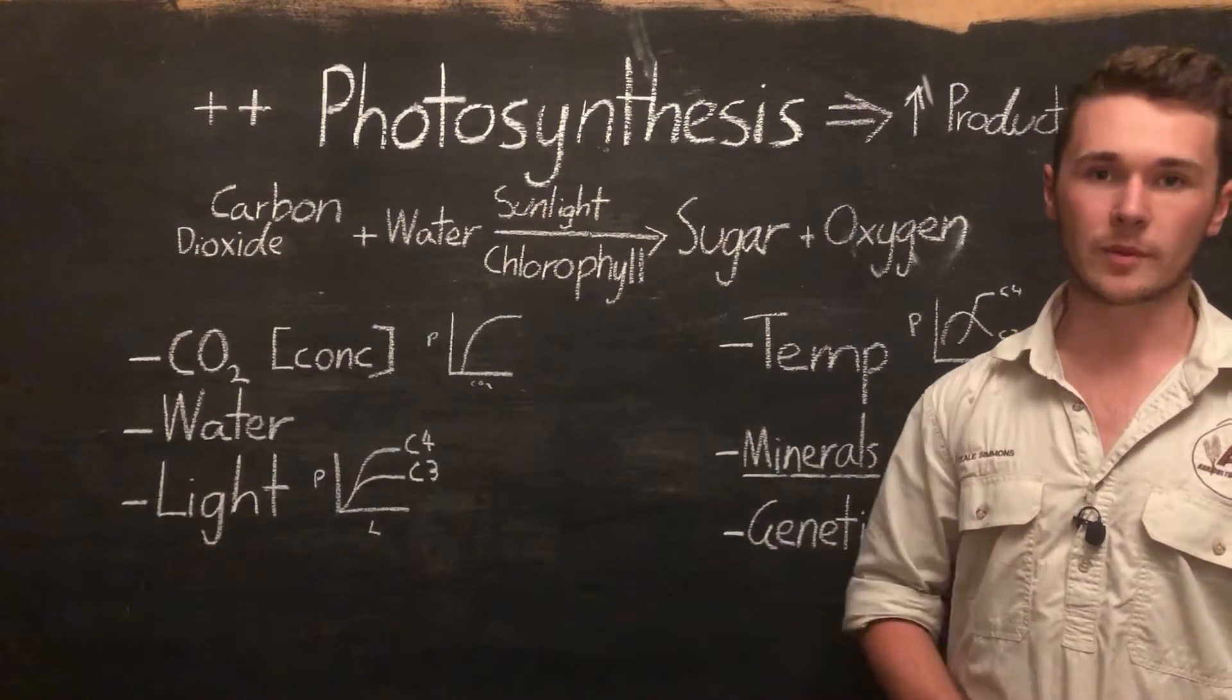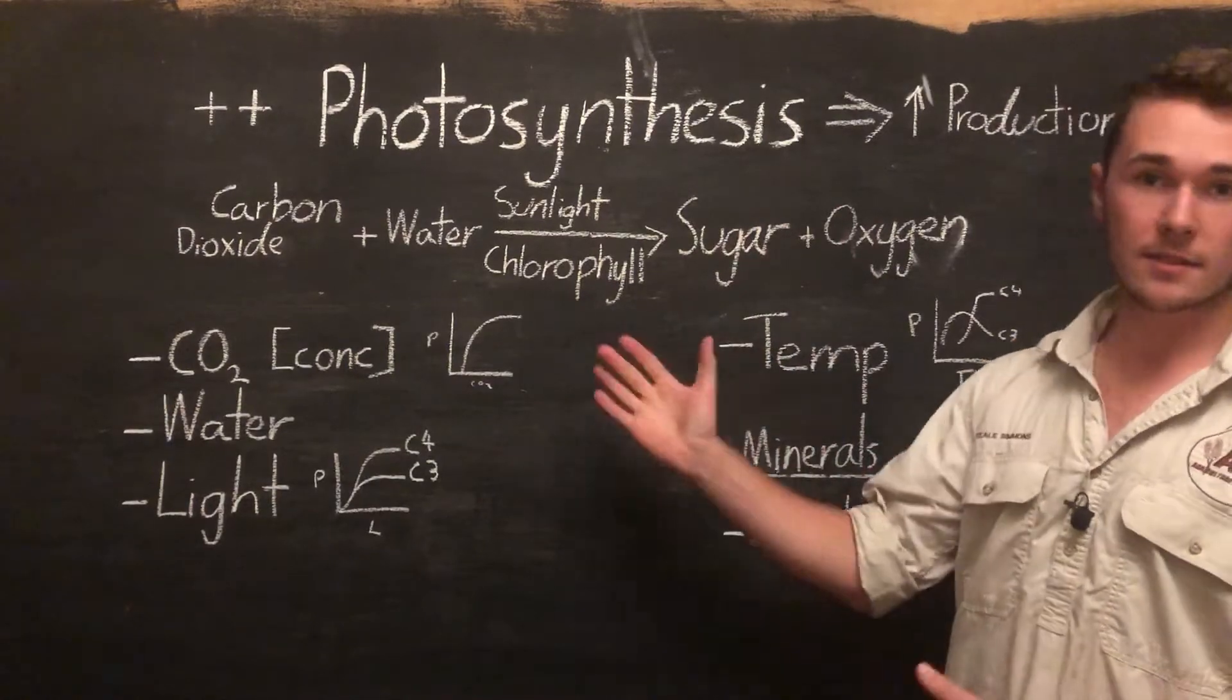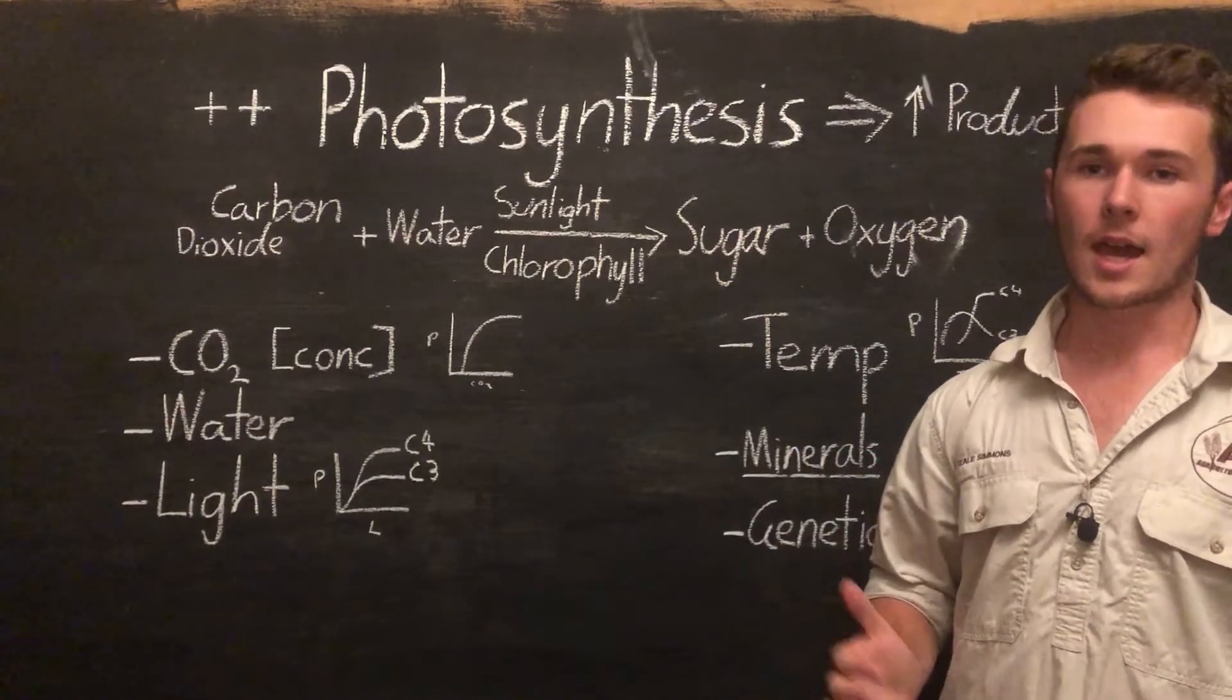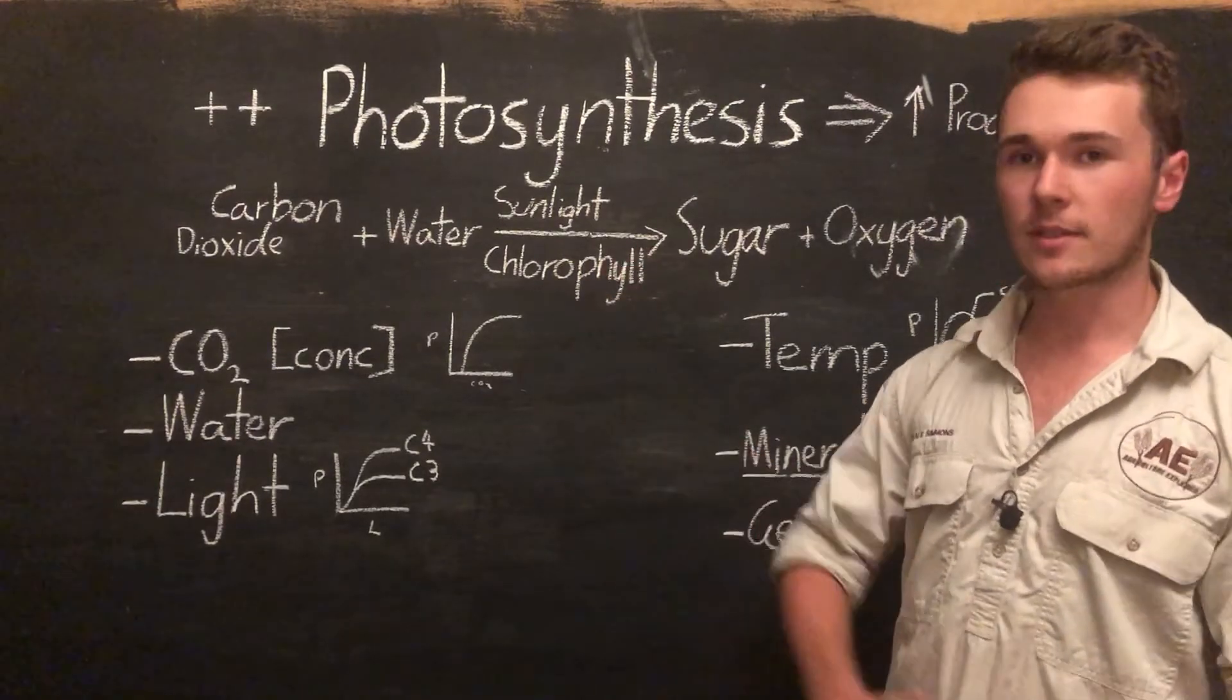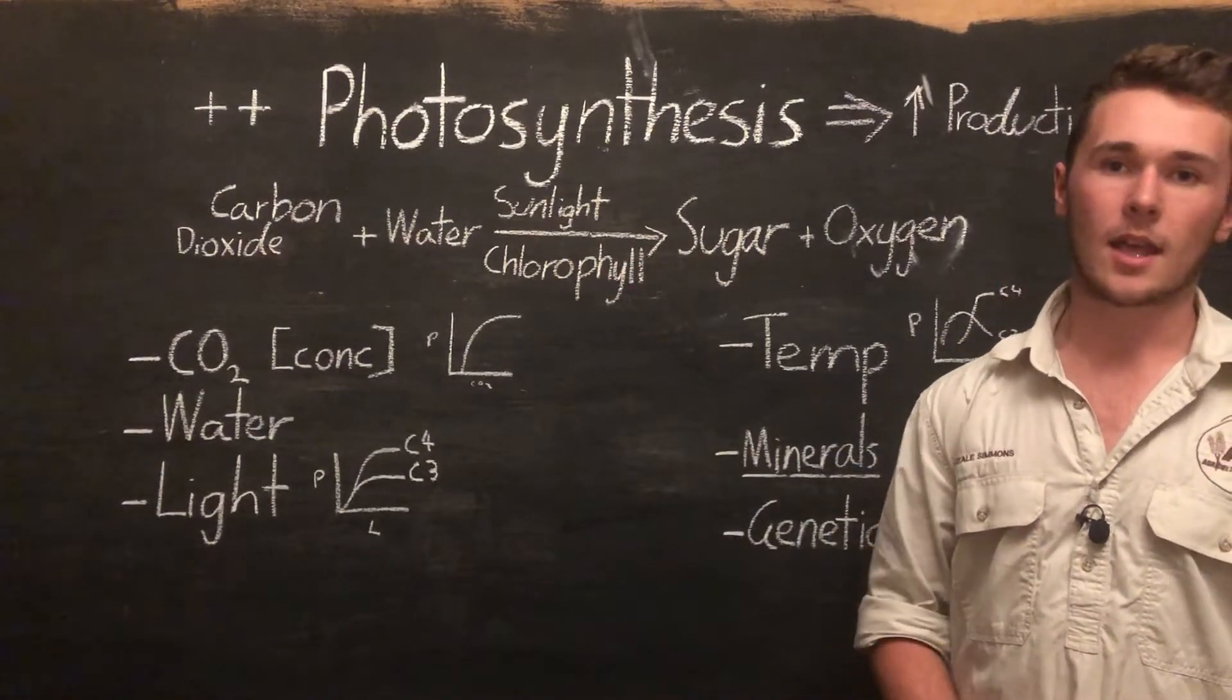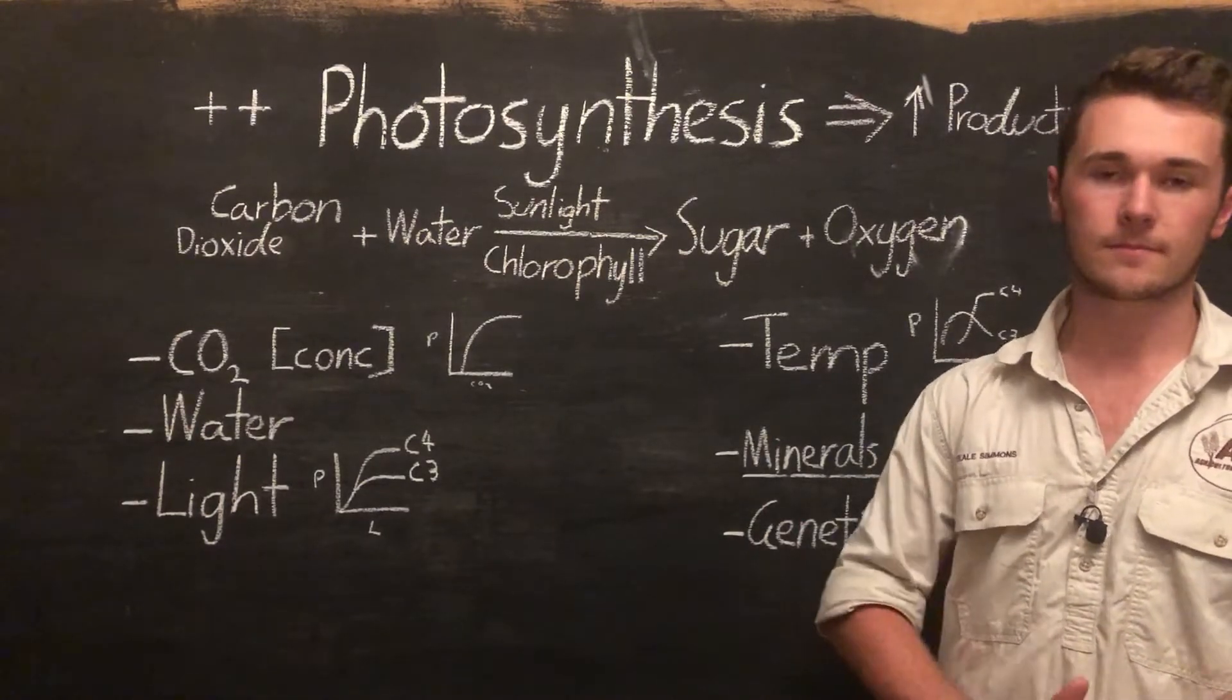In terms of increasing production, we've got to make sure we're keeping our plants healthy and happy. We can do that firstly by fulfilling all their requirements for photosynthesis and secondly by not disturbing them and causing stress. That's it—that is how we can increase photosynthesis. This is the first step we look at when we consult to growers.